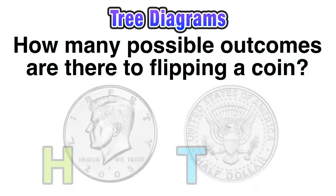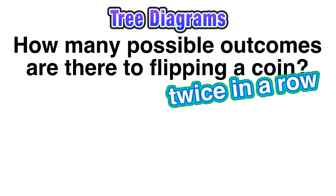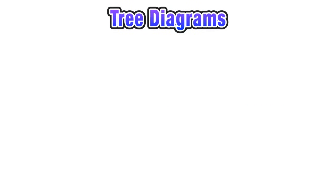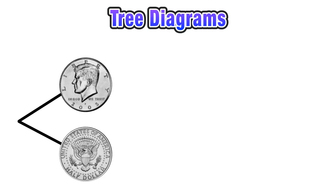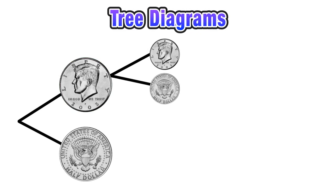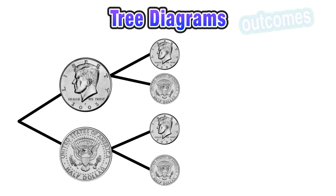But what about the possible number of outcomes for flipping a coin twice in a row? To find the possible number of outcomes here we're going to construct a tree diagram. On our first flip we're either going to end up with heads or with tails. If our first flip is heads then our second flip has two options — heads or tails. And the same goes if our first flip lands on tails; our second flip has two options again, either heads or tails. So now our completed tree diagram will help us find the exact number of possible outcomes for this scenario.